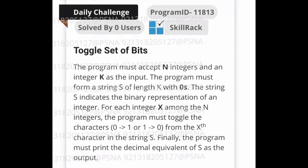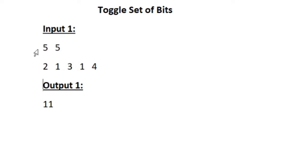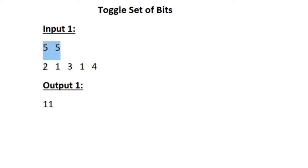This is the question asked in today's SkillRack daily challenge. In the first line of our input we are given the values of n and k — the first integer is n and the second integer is k. After that, in the second line we are given n integers as input.